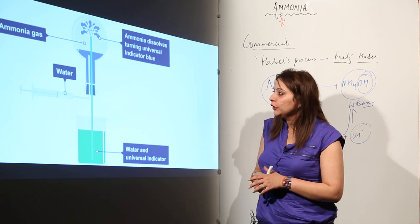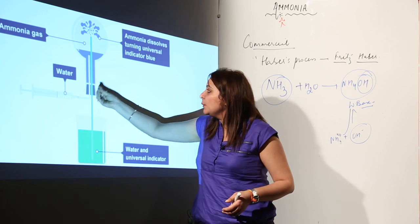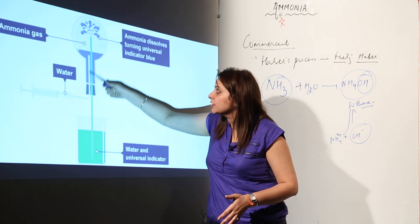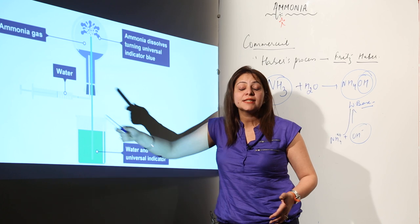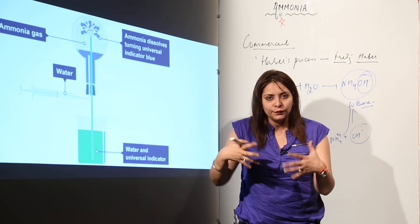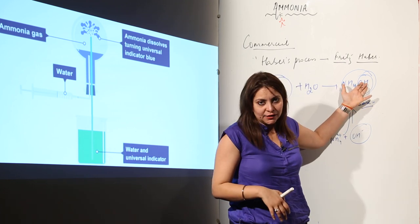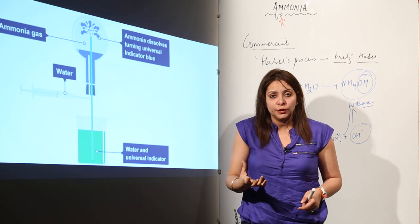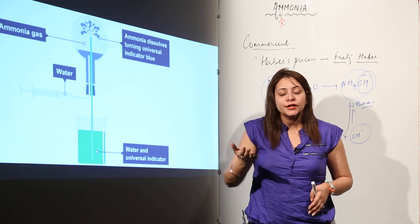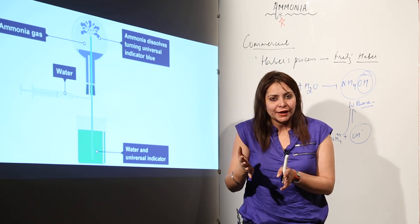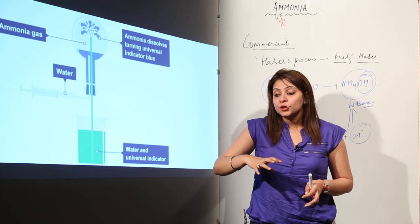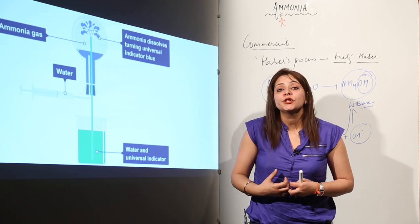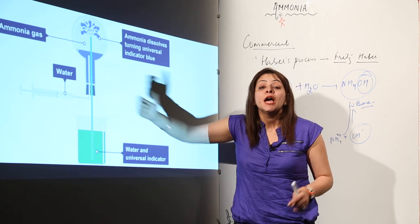To explain the solubility of ammonia in water, we press the dropper so that some water enters the round bottom flask. When this water goes into the flask, ammonia dissolves in it — since ammonia has greater solubility — and forms ammonium hydroxide. As ammonia gets converted into ammonium hydroxide, the pressure inside the round bottom flask falls because there is no more ammonia left in gaseous form.